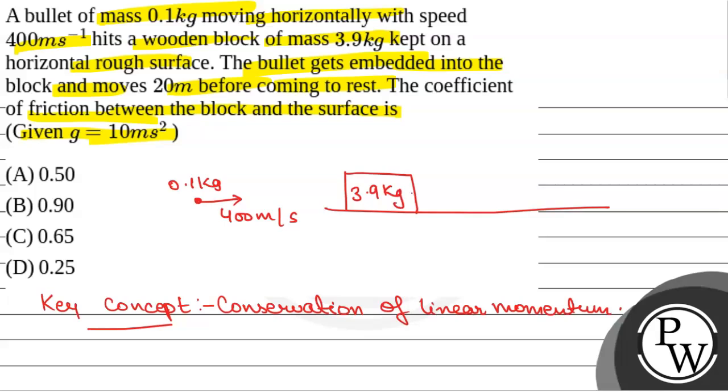And the wooden block along with bullet starts moving and it moves 20 meter before coming to rest. Here the wooden block along with bullet comes to rest. And this is a rough surface. Now we have to find the coefficient of friction of this rough surface.